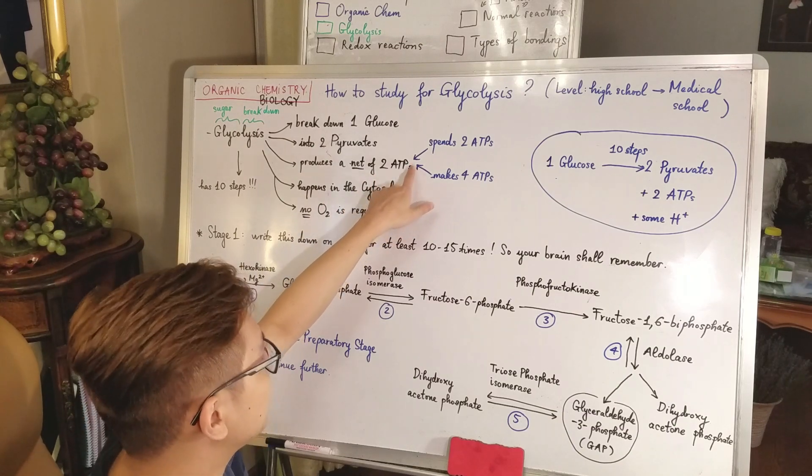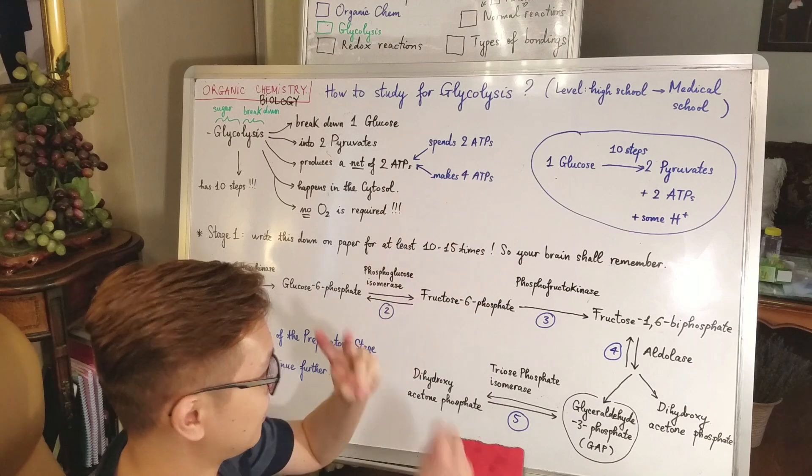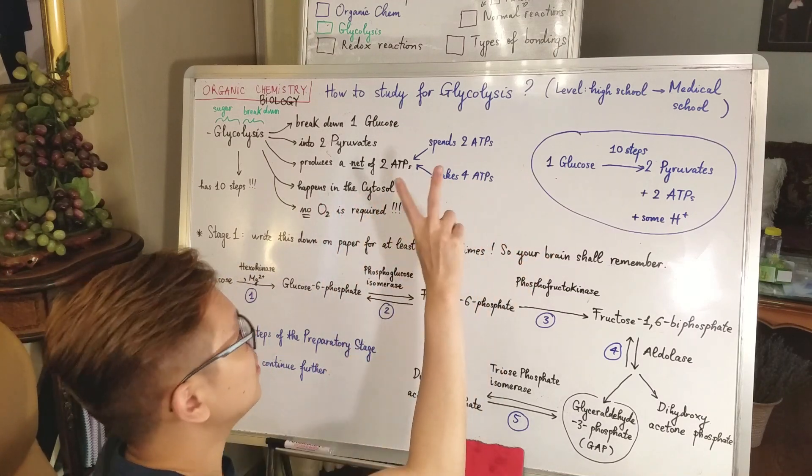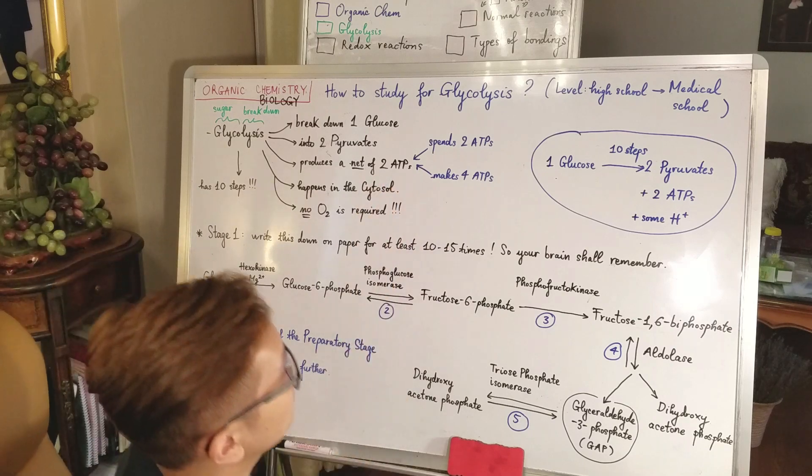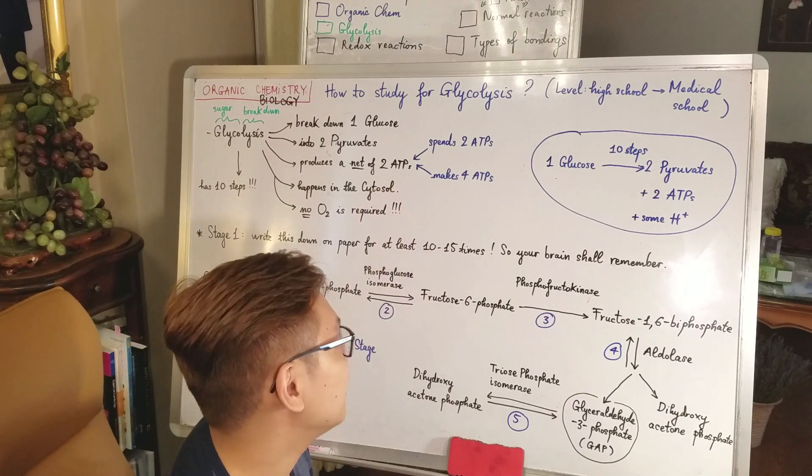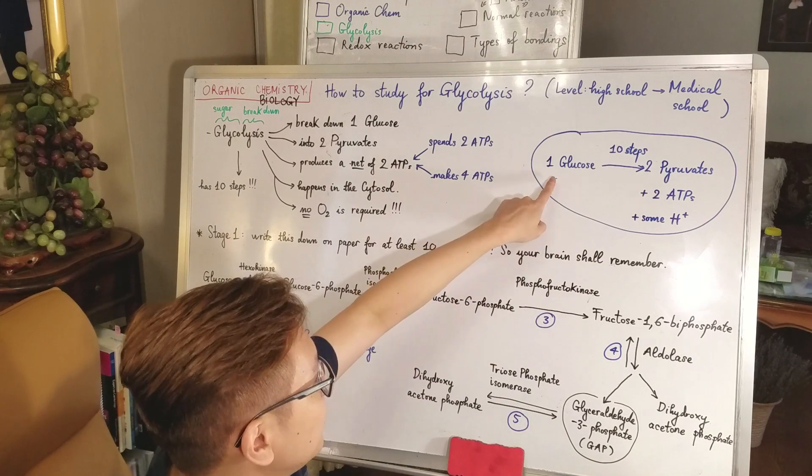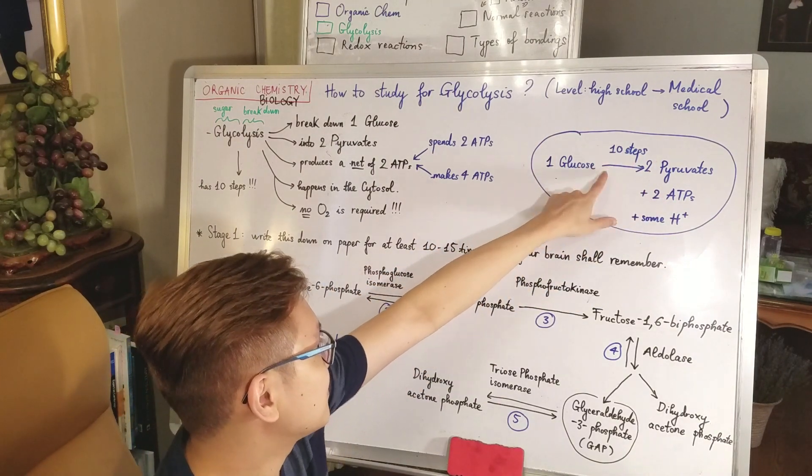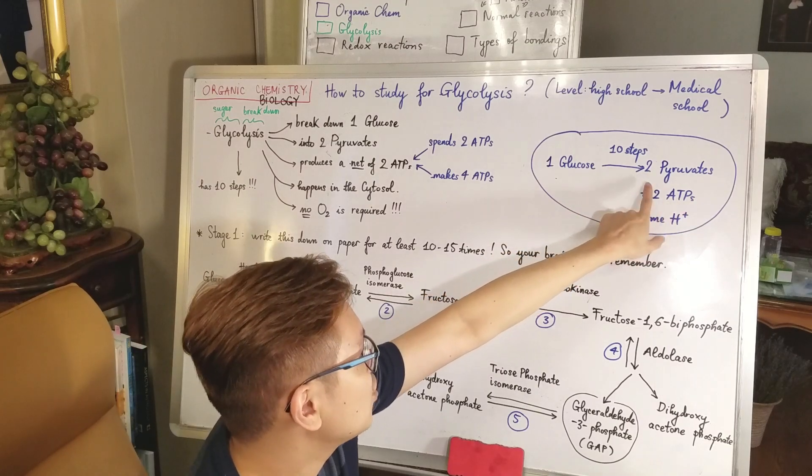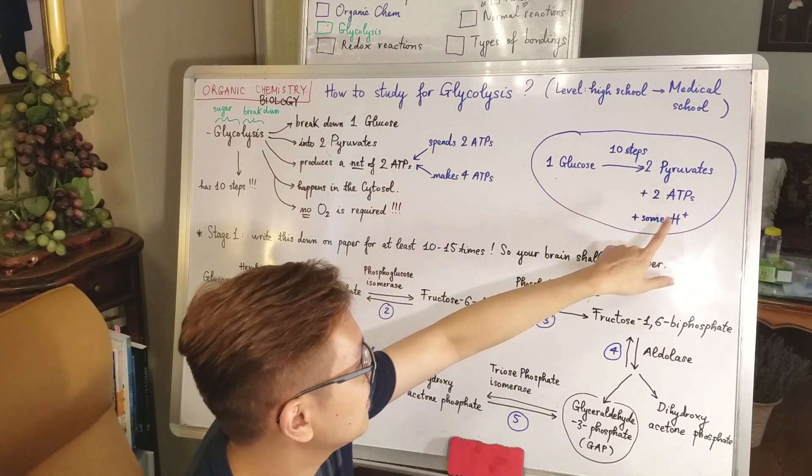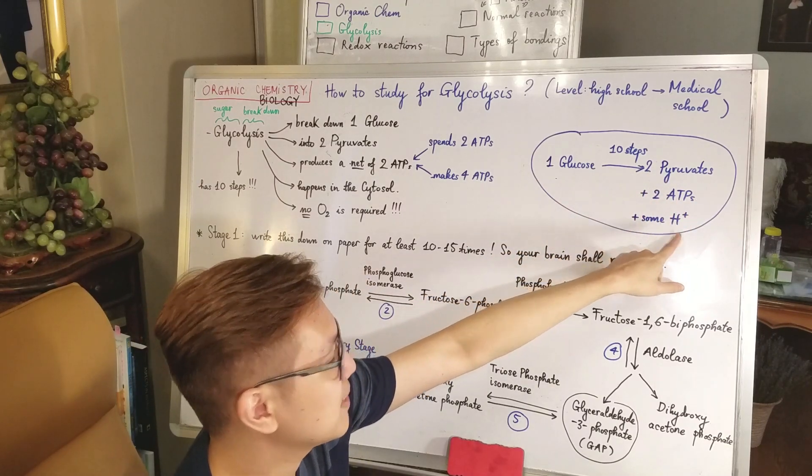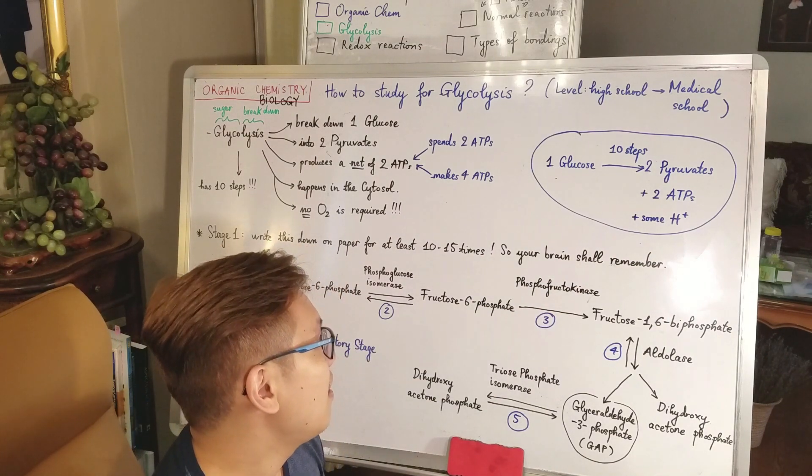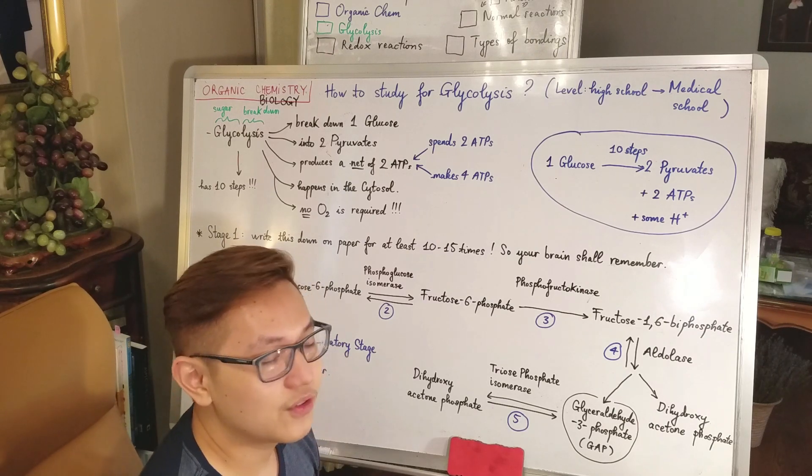It actually spends two and makes four, so in sum you make two net. In high school level they will only require you to remember this very little: one glucose, ten steps, to become two pyruvate, two ATP, and then maybe some H+ ions we call protons.